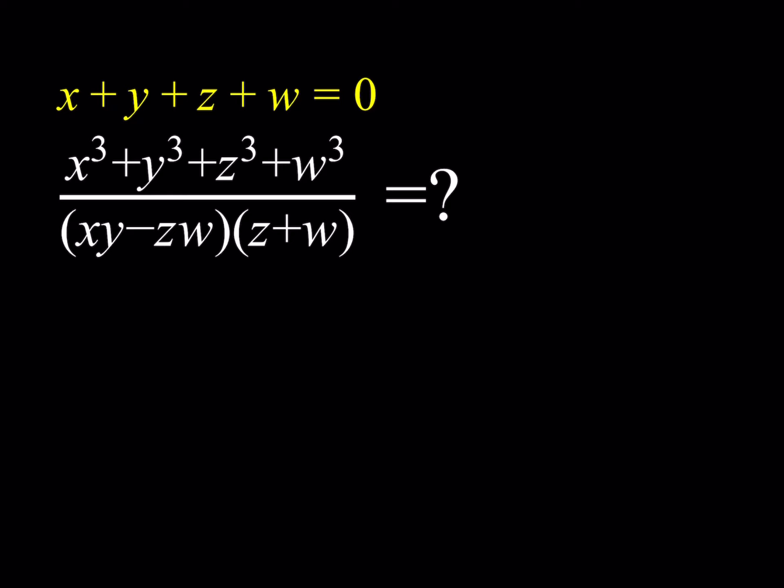There's a couple ways to go about it. You can isolate x plus y on one side and have z plus w on the other side, then cube both sides and go. Or you can do it a little differently. Let's start with my favorite.